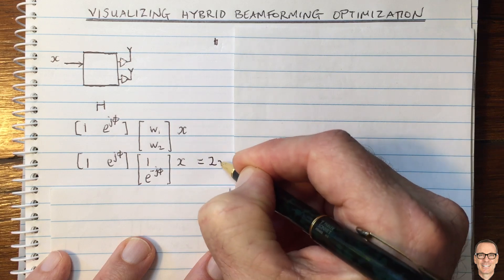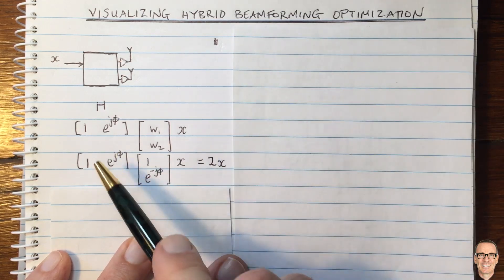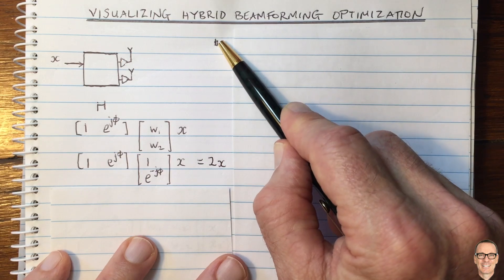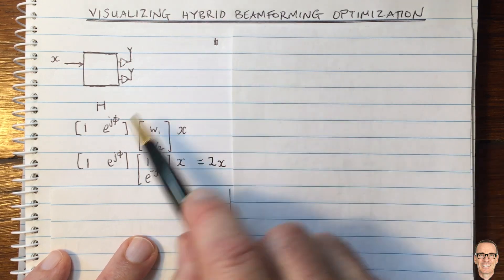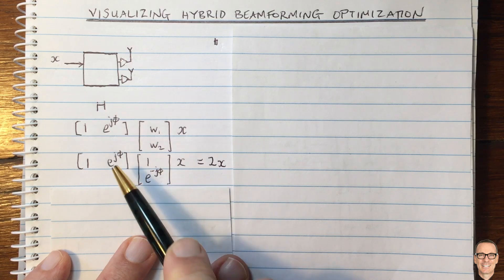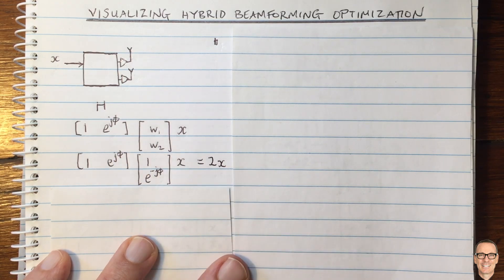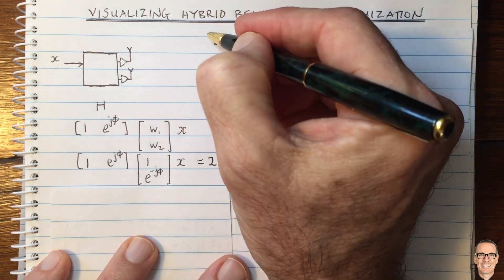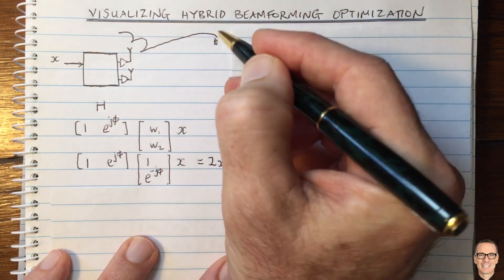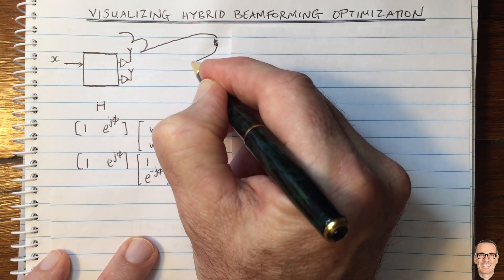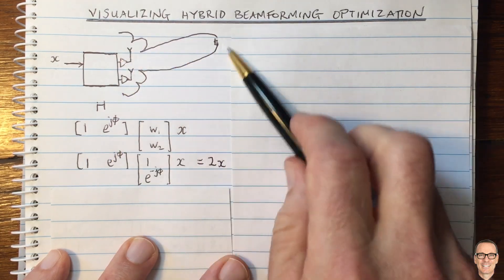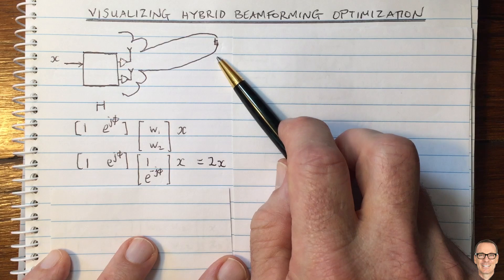By multiplying these two matrices together, we're going to get 2 times X. This channel matrix was the one written for the angle where our intended user is. At other angles, when this phase doesn't match what we're doing in our pre-compensator, we're not going to get such a strong signal. That's what gives us the concept of beamforming — at other directions signals don't add up as strongly, and we get the familiar beam shape picture.